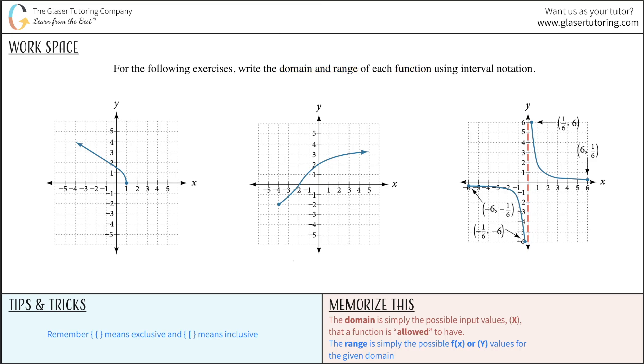All right, so let's just remember, domain is simply the possible x values that the function is allowed to have. It's the range of x values. Whereas the range is going to be the set of y values that can be obtained given the domain of the function.